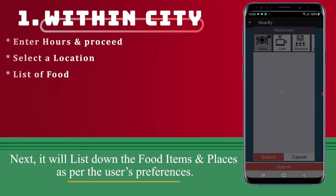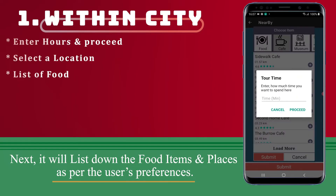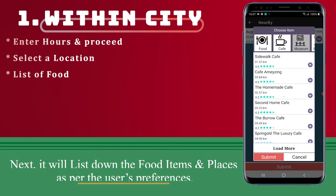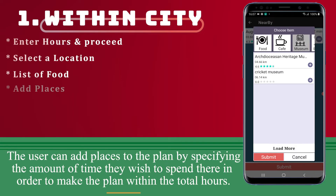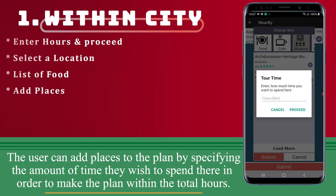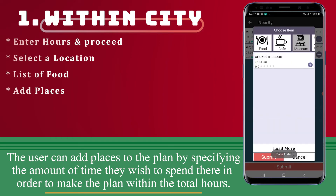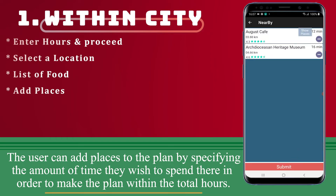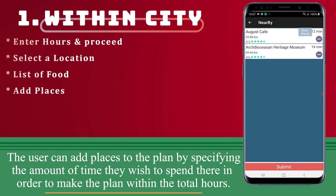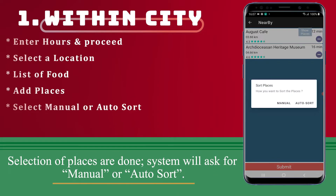Next, it will list down the food items and places as per the user's preference. The user can add places to the plan by specifying the amount of time they wish to spend there, in order to make the plan within the total hours. Selection of places is done.